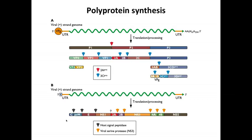Here's an example at the bottom of a flavivirus that does the same thing. Again, you make a polyprotein and process it, in this case by both viral and host proteases.